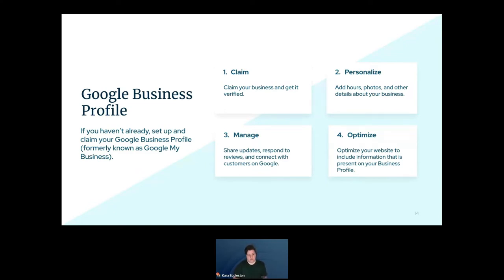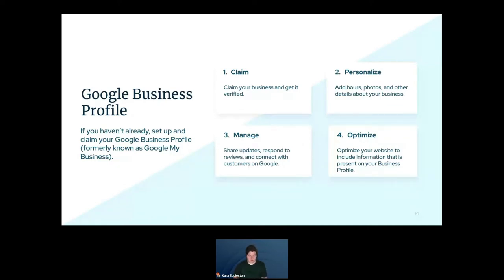Then personalize your profile by adding photos and important details about your business. You'll want to actively manage your profile — share updates, respond to reviews, and connect with customers through Google My Business. Google really likes when you utilize all their features. Lastly, optimize your website to include information that is present on your business profile. This helps Google verify the accuracy of the info you submitted, because sometimes if they don't match up, Google will override the information you've submitted in your profile.